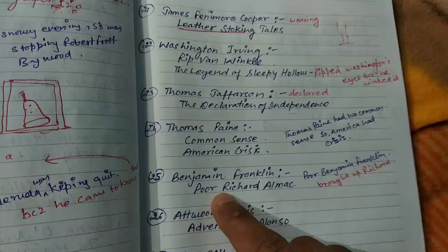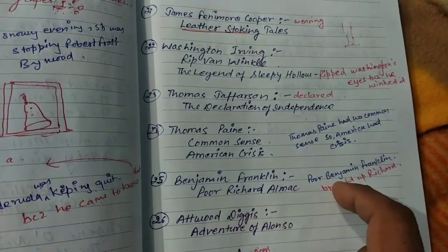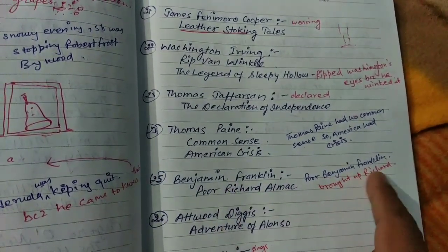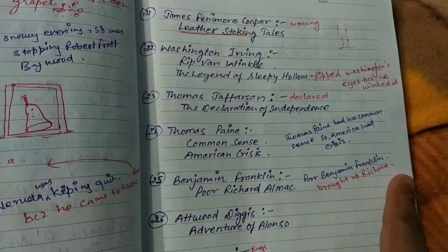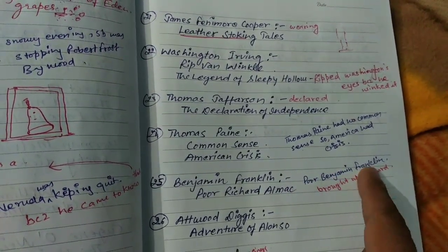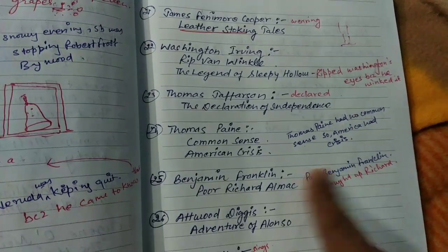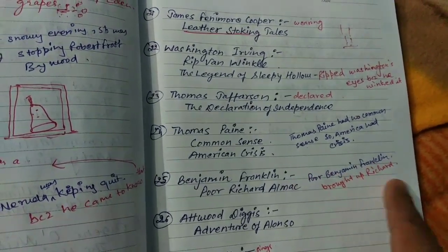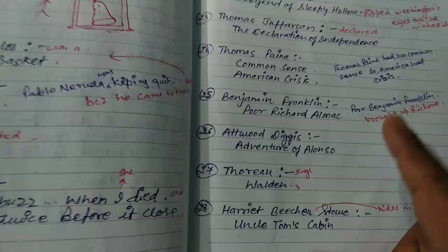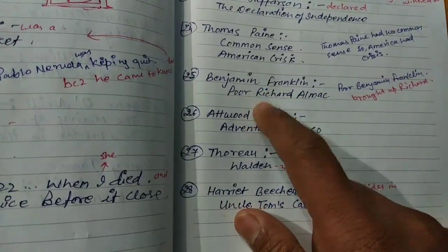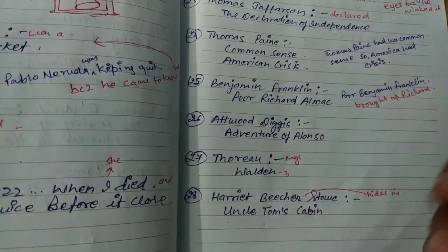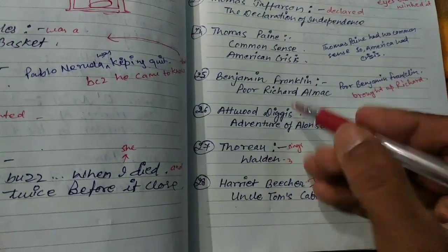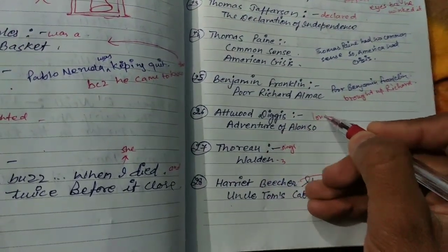Next is Benjamin Franklin. Benjamin Franklin brought up Poor Richard — you can say Benjamin Franklin raised Poor Richard. This helps you remember Poor Richard's Almanac by Benjamin Franklin.